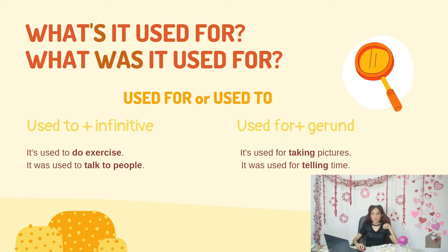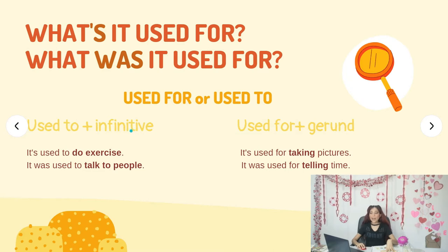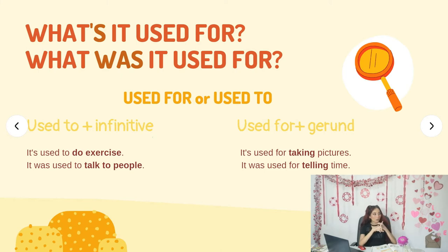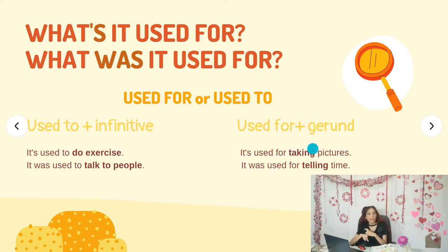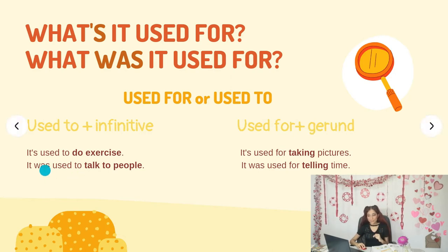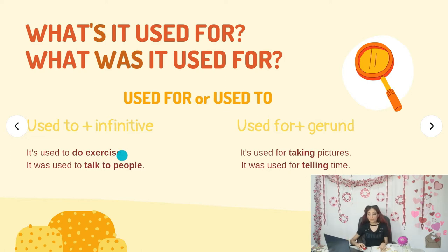We have two ways to answer these questions: we can use 'used for' or 'used to'. The difference is in the formula. 'Used to' is used plus an infinitive verb — the verb in its base normal form, for example: walk, talk, dance, sing, play, write, read. 'Used for' is used plus a gerund, for example: talking, dancing, singing, playing, typing, reading, writing — with -ing. The example: 'it's used to do exercise' — the verb is in the infinitive, no -ing.